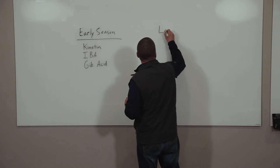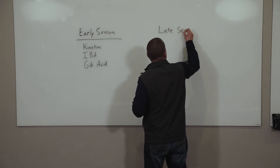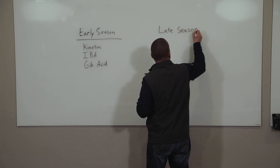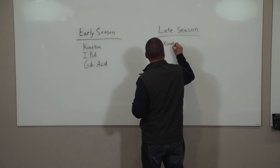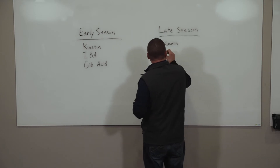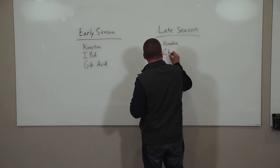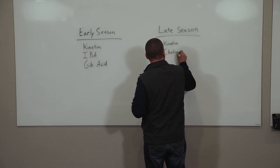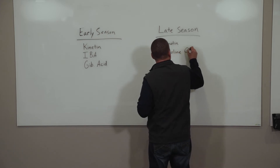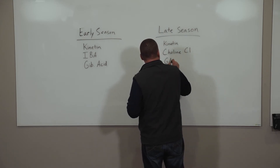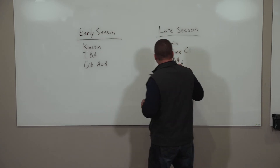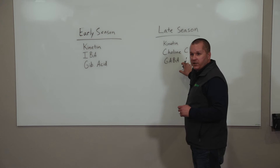When it comes to late season PGRs, it's a whole different conversation. Let me list some of these out. We start with kinetin again, because it can be used late season as well. There are also compounds like choline chloride, and then GABA — gamma-aminobutyric acid.